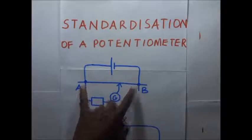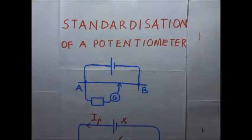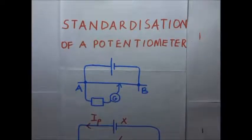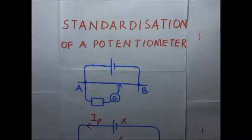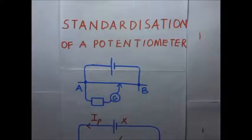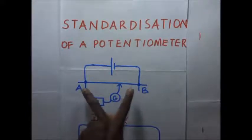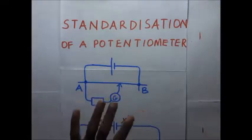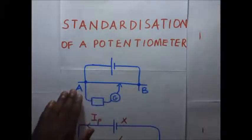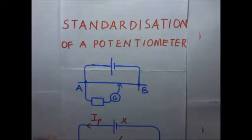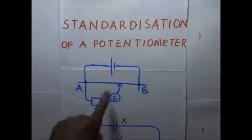The PD per unit length could be expressed as volts per centimeter or volts per meter. In an experiment where the potential difference per unit length of the wire is obtained, we describe such an experiment as one that is meant to standardize or calibrate a potentiometer.